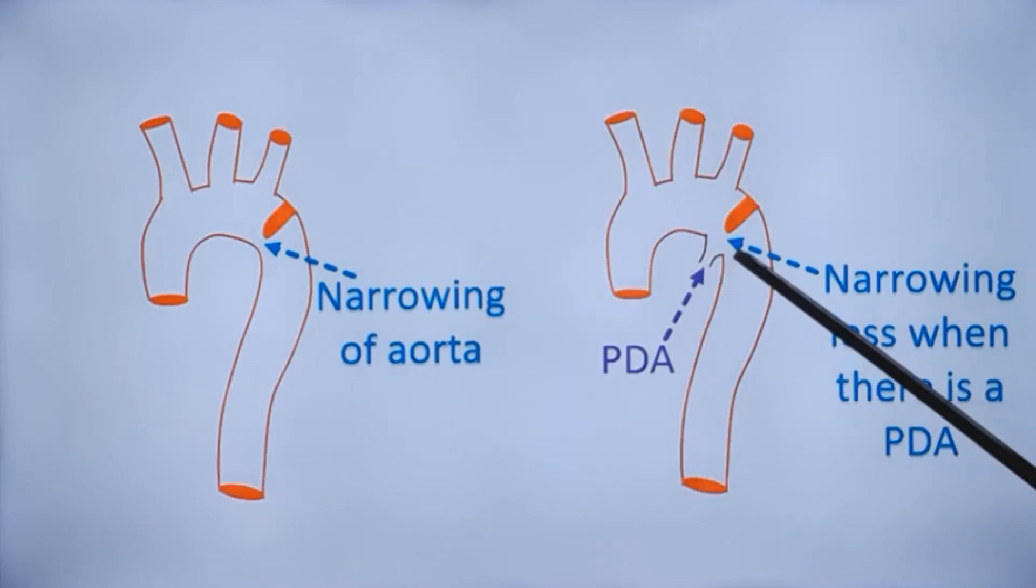So it is highly important to meticulously see this region on echocardiography. Sometimes transthoracic echocardiography may not be enough and you may need transesophageal echocardiography with higher resolution to pick up these abnormalities.